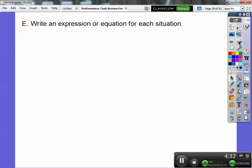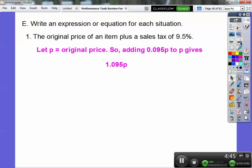Write an expression for each situation. The original price of an item plus a sales tax of 9.5%. 9.5% becomes 0.095, so let P be the original price. If we add 0.095P, the sales tax, we get 1.095P.